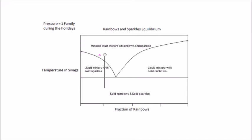We start at point A. This point is in a one-phase region, a miscible liquid mixture of rainbows and sparkles. The fraction of rainbows can be read directly from the x-axis and is 0.25. The fraction of sparkles is 1 minus the fraction of rainbows, 0.75. Since there is only liquid present, the liquid composition is the same as the total composition.